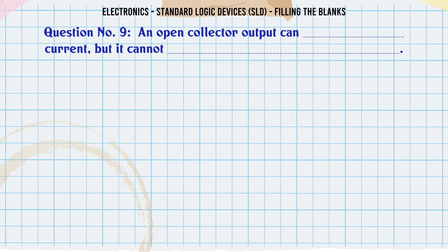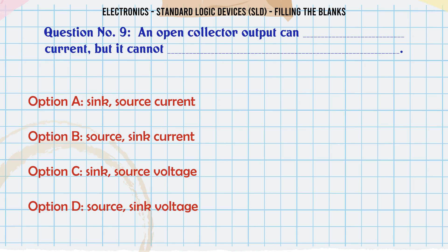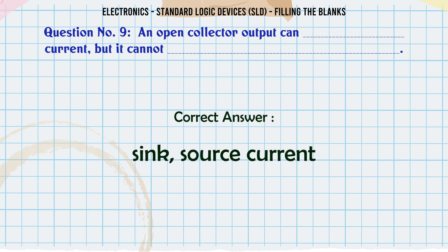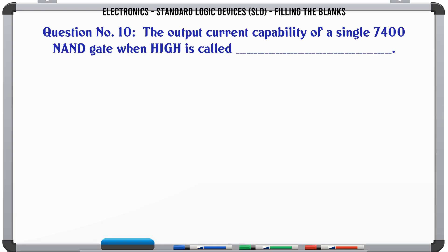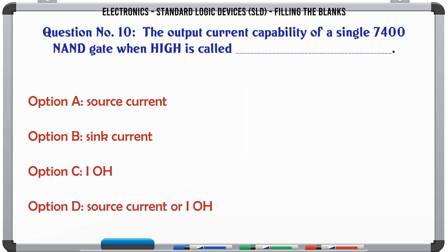An open collector output can sink current but it cannot source current. A sink, source current. B source, sink current. C sink, source voltage. D source, sink voltage. The correct answer is: sink current — it can sink but cannot source current.